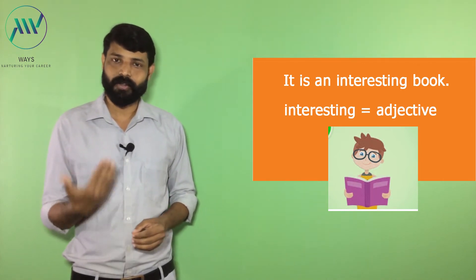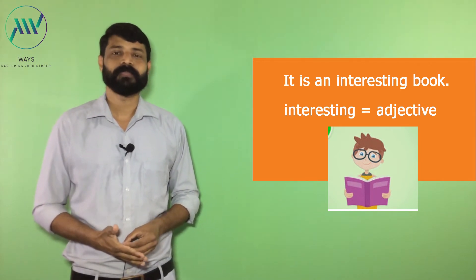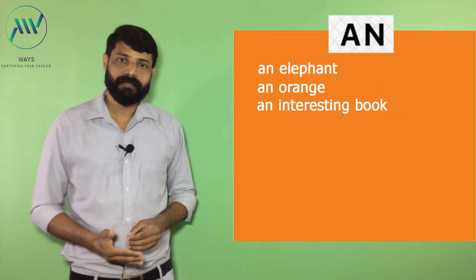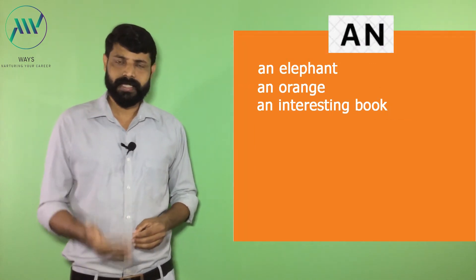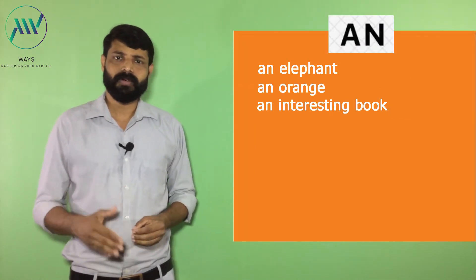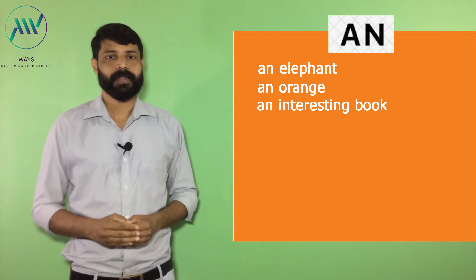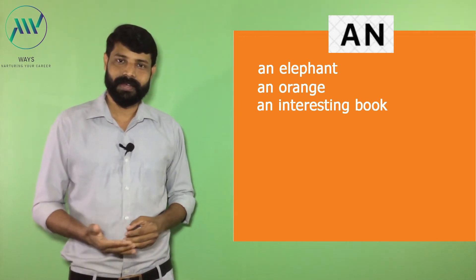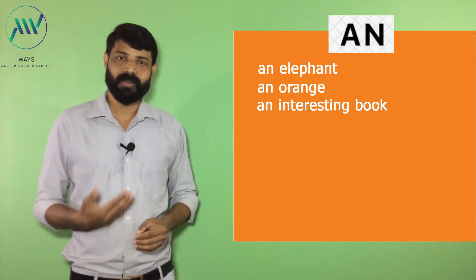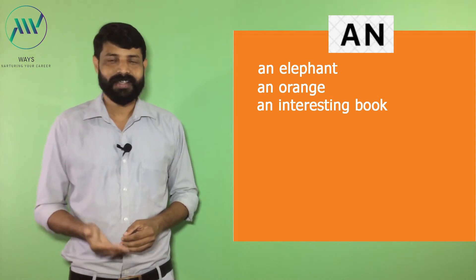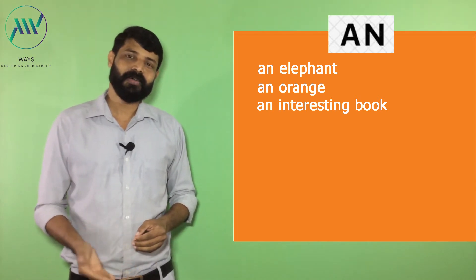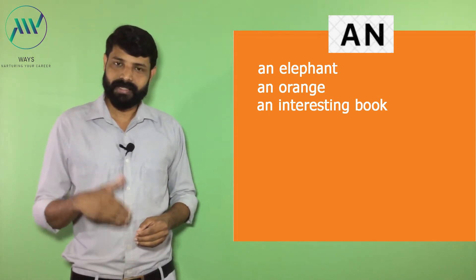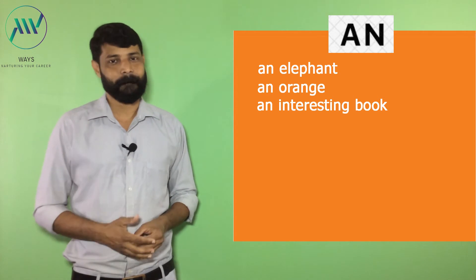When words start with vowel sounds, we always use article AN. For example: an elephant, an orange, an interesting book. All these examples start with a vowel sound, so we use article AN.